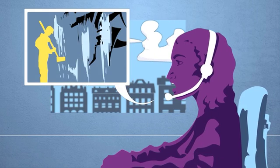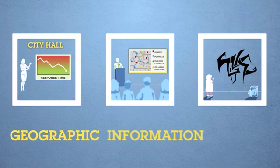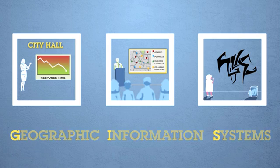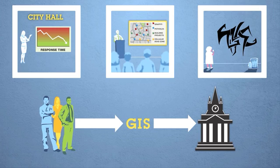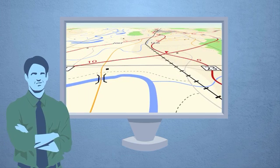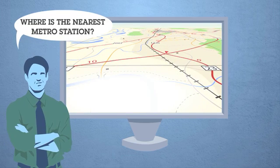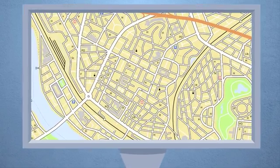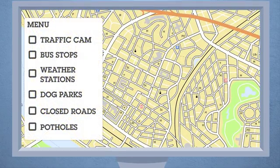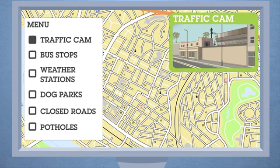What do these three events have in common? They're all examples of how geographic information systems — also called GIS — are rapidly becoming a vital part of how citizens interact with their governments. In its broadest sense, GIS are technological tools used to depict spatial information visually and to conduct location-based analysis. The latest advancements in GIS technology leverage existing web-based map servers as base platforms for web 2.0 applications, making them easy to use and accessible to a wide range of users.